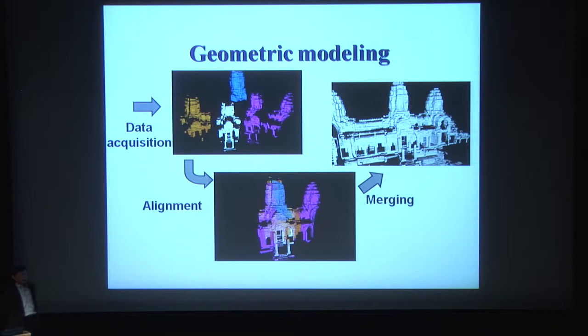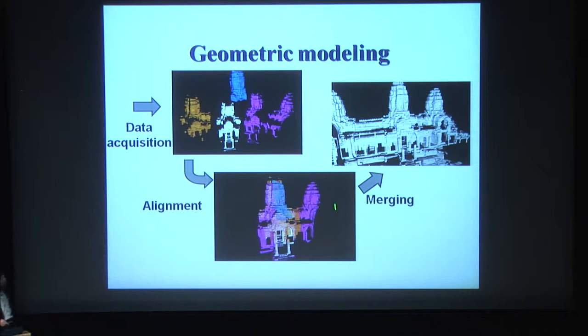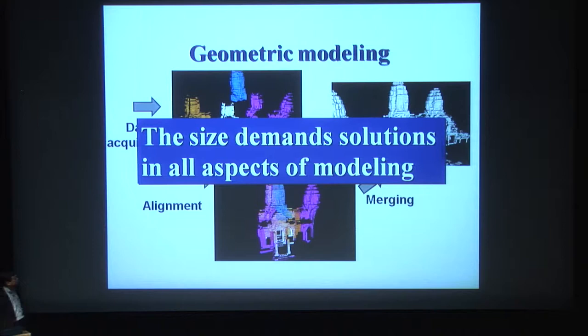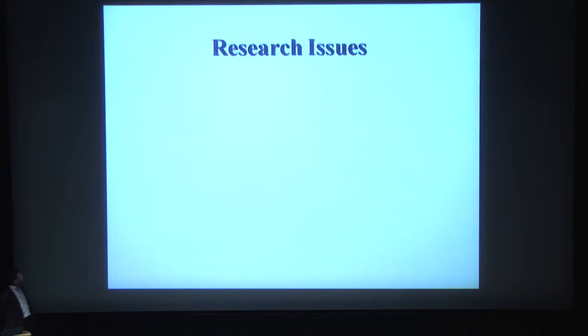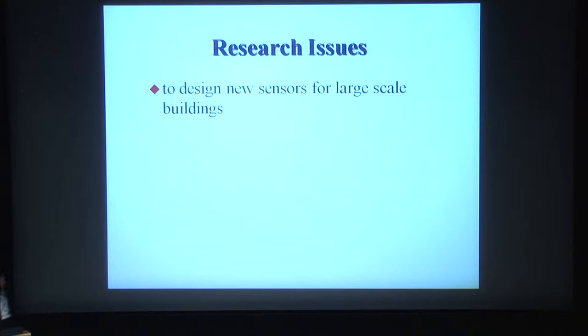Usually in geometric modeling there are three steps of pipeline processing: first, data acquisition. Since data is obtained from various viewing directions, we have to worry about relative relations between sensors and how to connect all data into a uniform format. If the object is relatively small, there are many commercially available sensor softwares. However, due to the size of the Bayon Temple, we have to solve every aspect of the issues — we have to design new sensors and new software.